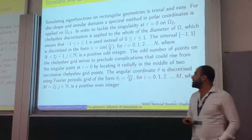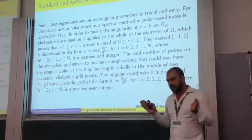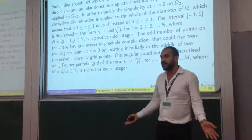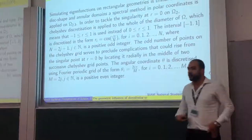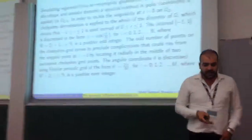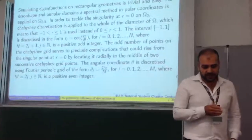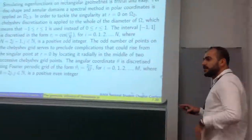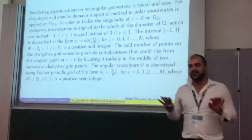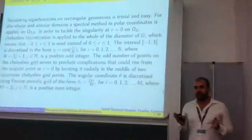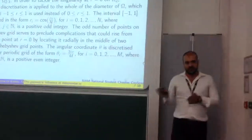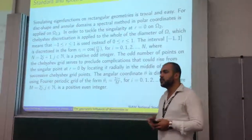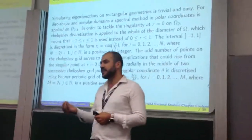It's written by Trefethen from Oxford. He has combined Chebyshev discretization for the radial variable and Fourier periodic discretization for the angular variable. The Chebyshev discretization of the radial variable is not chosen from zero to r, which would be the intuitive choice, but rather from minus r to r, and then applies the Chebyshev gridding. What that does is, if we choose an odd number of Chebyshev points, then we preclude the trouble from the singularity at the origin.